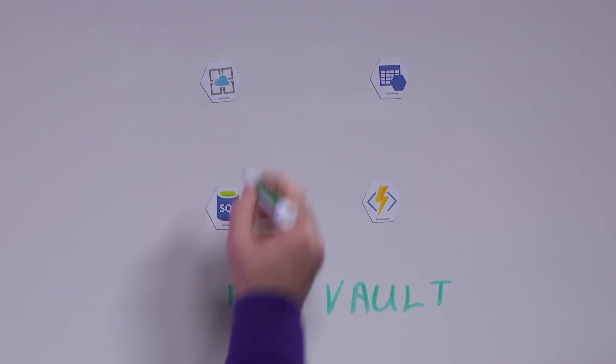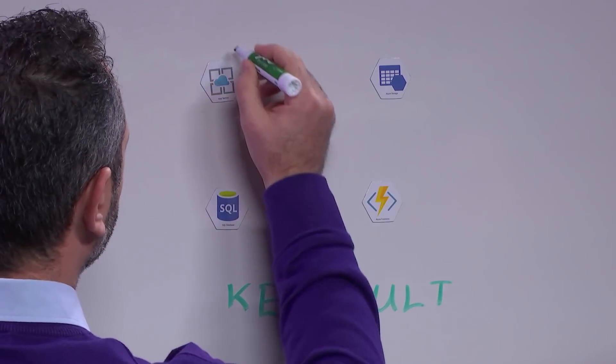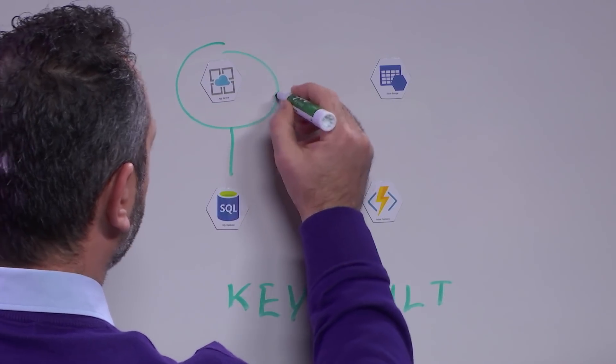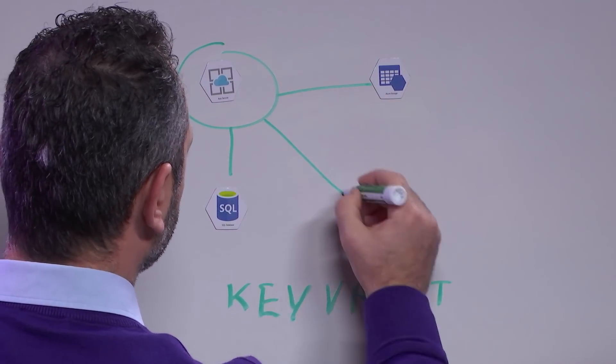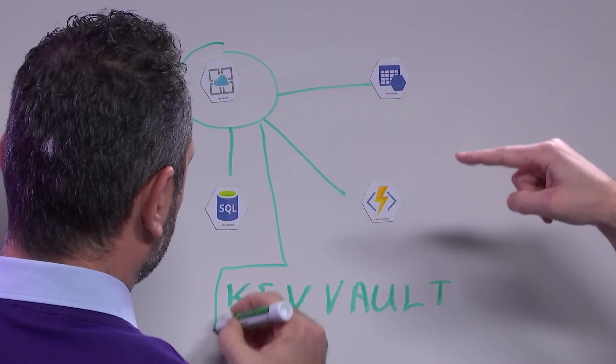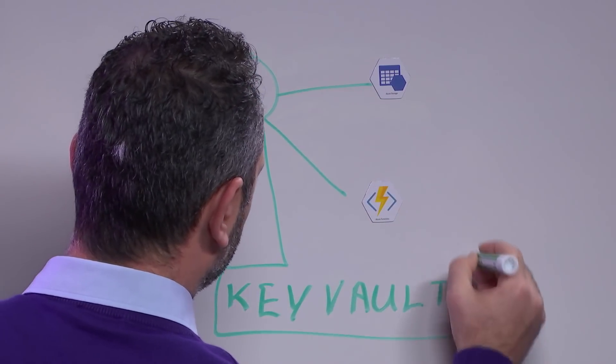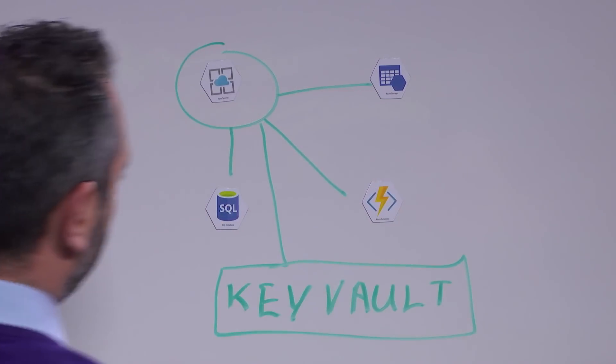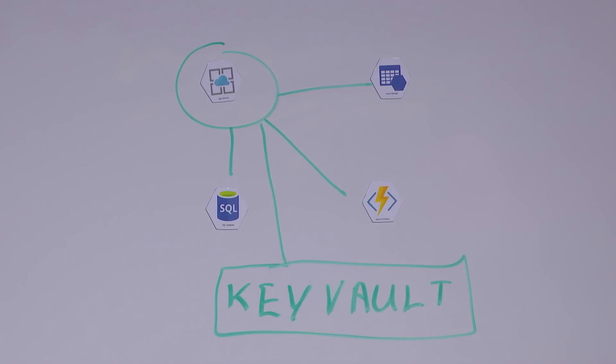So my team, we're here saying, okay, we want to generate this as maybe the architecture for my app. Let's do a circle and then everything connects to that. App Service is going to use all of these — it's going to use a Key Vault, a database, Functions, and storage.